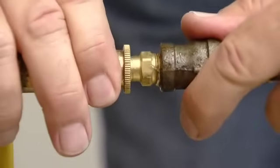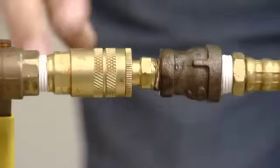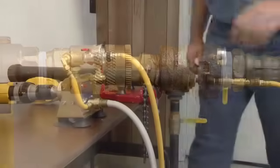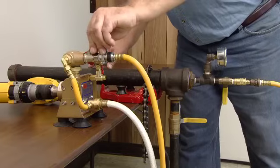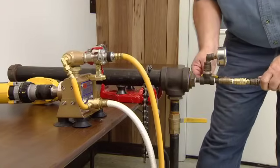Connect the end of the high pressure hose to the system to be tested. Open both the output valve on the pump and the valve on the system being tested.